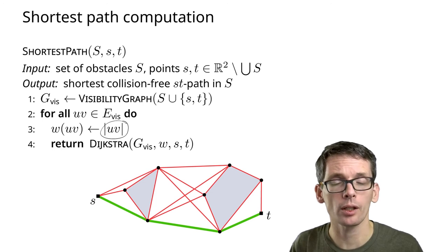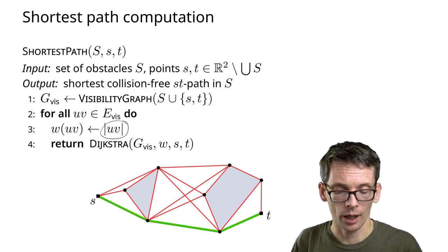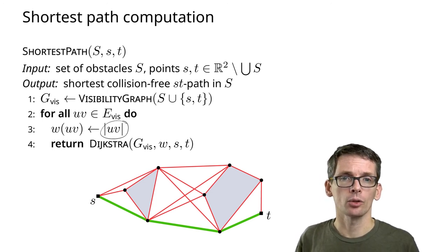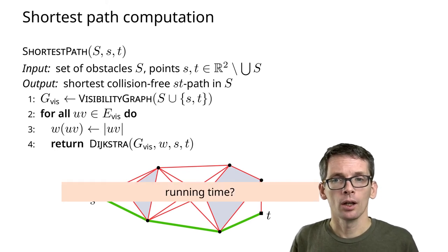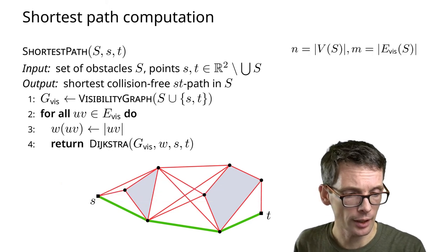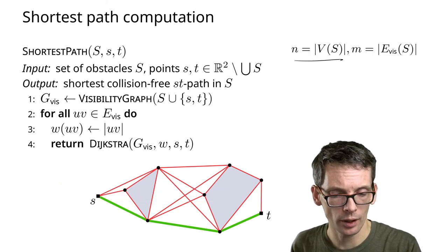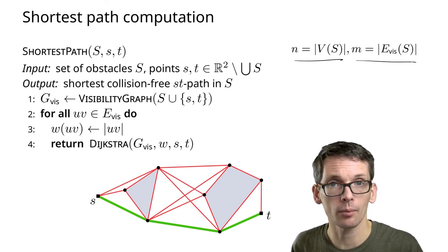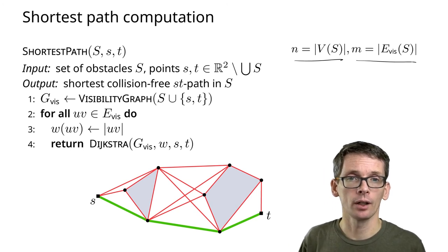We have positive weights, so we can use Dijkstra's algorithm and find the shortest path from s to t in this way. What is the running time of this? Let's say n is the number of vertices, m is the number of edges in the visibility graph.